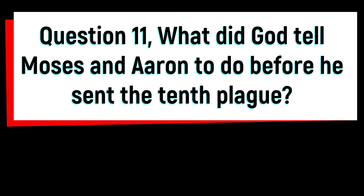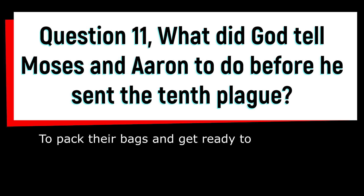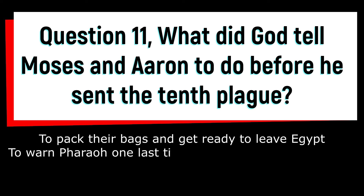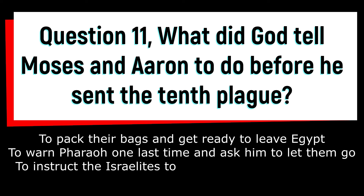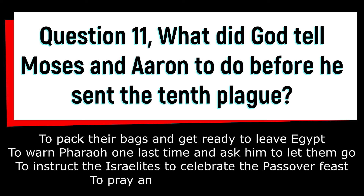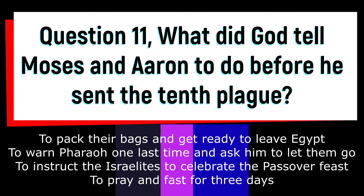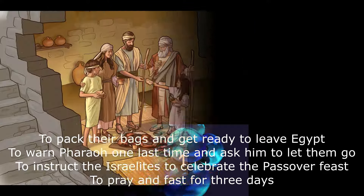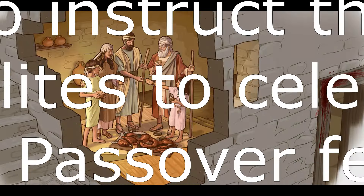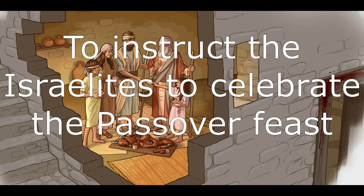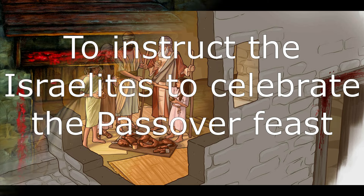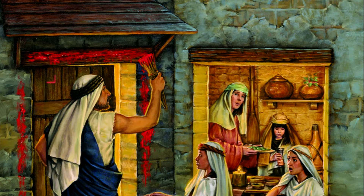Question 11: what did God tell Moses and Aaron to do before he sent the tenth plague? To pack their bags and get ready to leave Egypt; to warn Pharaoh one last time and ask him to let them go; to instruct the Israelites to celebrate the Passover feast; or to fast for three days? The answer is to instruct the Israelites to celebrate the Passover feast. God told them to kill a lamb and eat it with unleavened bread and bitter herbs. They also had to put some of the lamb's blood on their doorposts as a sign of their faith in God.